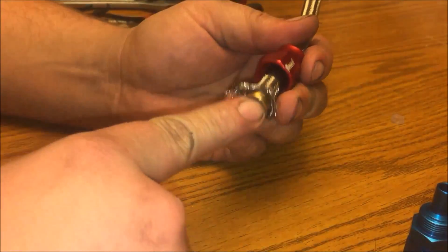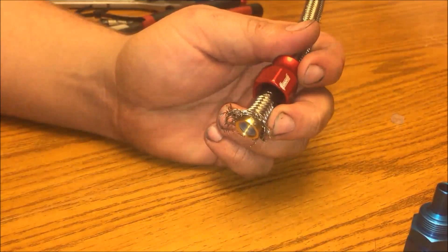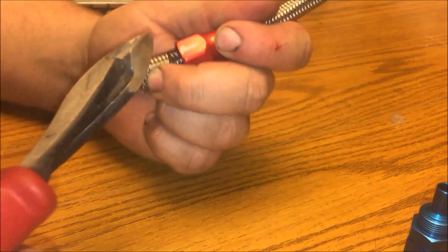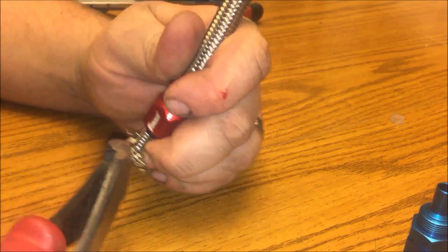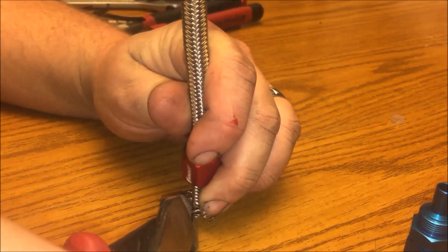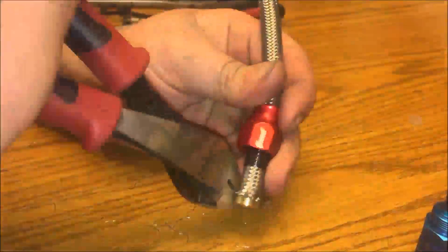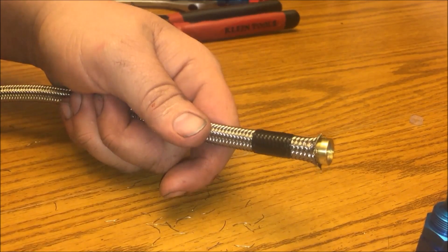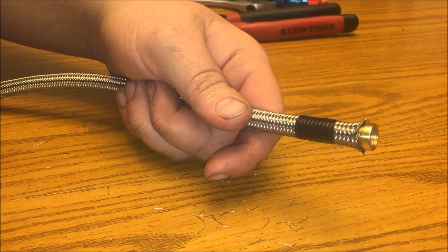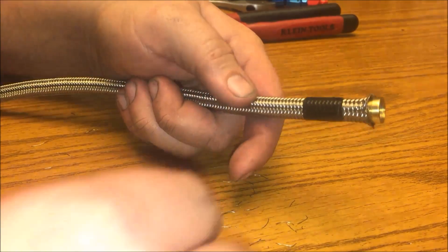So we've got our ferrule on there now. We're going to want to trim up the stainless pieces so they won't go past the ferrule. All the excess stainless is cut off of here now.